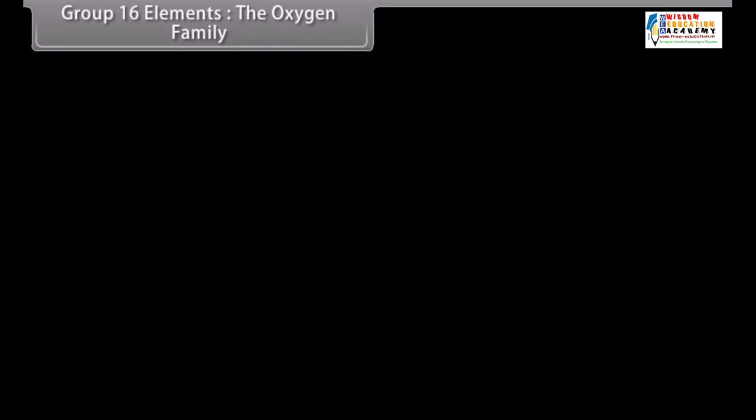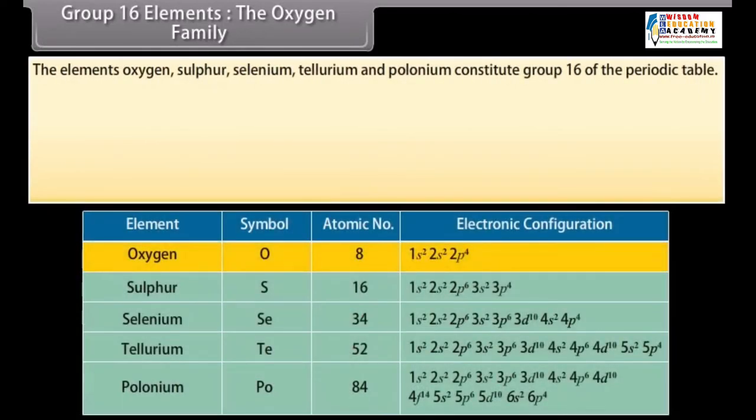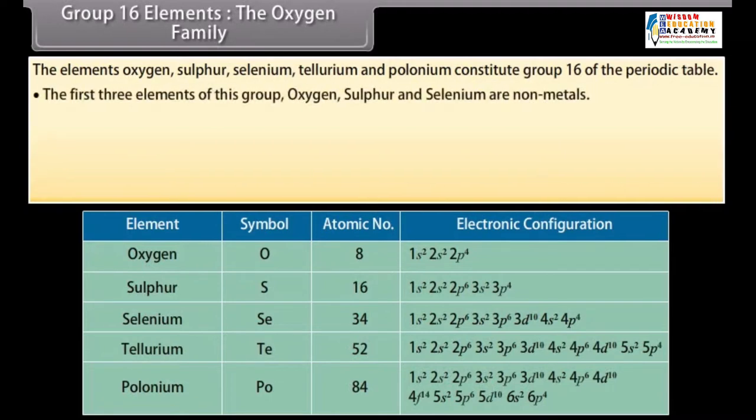Group 16 elements, the oxygen family. The elements oxygen, sulfur, selenium, tellurium and polonium constitute group 16 of the periodic table. The first three elements of this group—oxygen, sulfur and selenium—are non-metals.